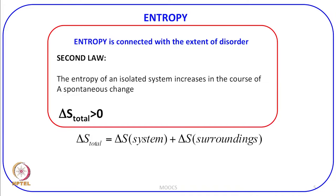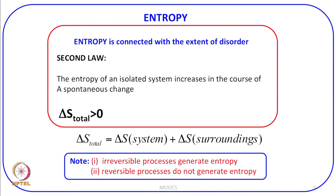Entropy is connected with disorder. Two points to be noted: first, irreversible processes generate entropy; second, reversible processes do not generate entropy. A sudden expansion of a gas is an irreversible process and a lot of entropy is generated. But if the process is carried out in infinitesimally small steps and reversibility is maintained, then the energy is not dispersed in a chaotic manner. That is why reversible processes do not generate entropy, and these statements we will be using in our next discussion.